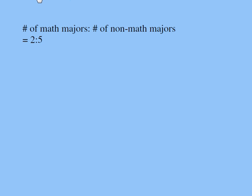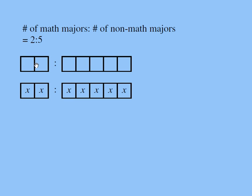Now 2 to 5 ratio means for every two groups of math majors, there are five identical groups of non-math majors. In other words, for every two math majors, there are five non-math majors. But we don't know exactly how many math majors are there. We don't know exactly how many non-math majors are there. But we can certainly assume that each group has x students.